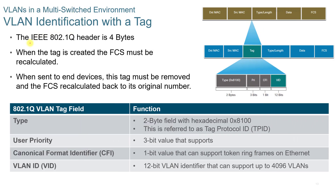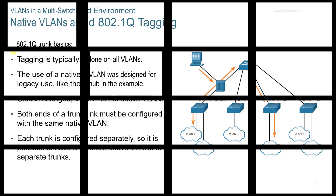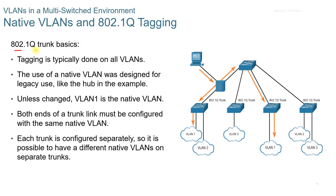VLAN identification uses a tag — the IEEE 802.1Q header is four bytes. When the tag is created, the FCS must be recalculated, and when sent to end devices, the tag is removed and the FCS is recalculated back to its original number. For the basics of the 802.1Q trunk, tagging is typically done on all VLANs. The native VLAN was designed for legacy use. Unless changed, VLAN 1 is the native VLAN, and both ends of a trunk link must be configured with the same native VLAN. Each trunk is configured separately, so it is possible to have different native VLANs on separate trunks.